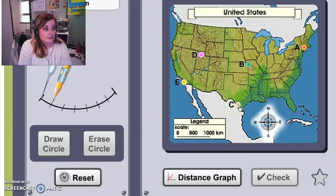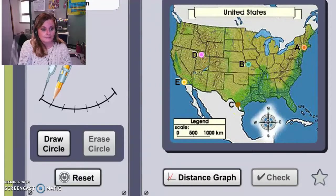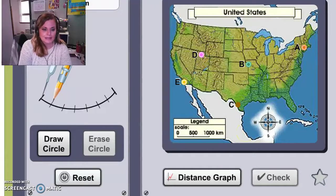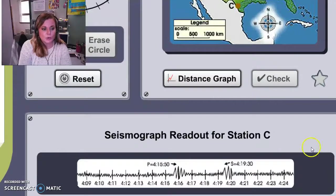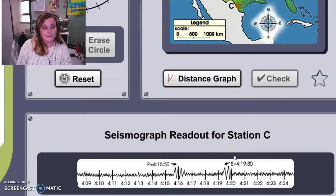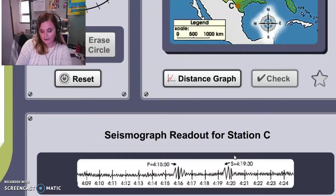So here, if I let's say click on C... Didn't seem like anything happened, but what I need to do is I need to scroll down to the bottom of this page because it's going to show me the arrival time of my P waves here and the arrival time of my S waves here. And the P waves arrived at 4:15 and 50 seconds, and the S waves arrived at 4:19 and 30 seconds. So we need to figure out the difference in time here from 4:19 and 30 seconds to 4:15 and 50 seconds.